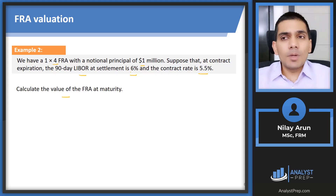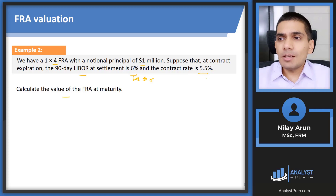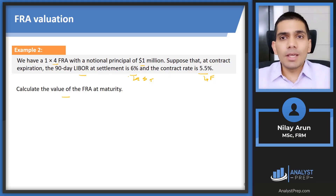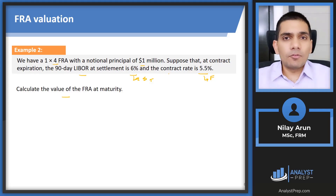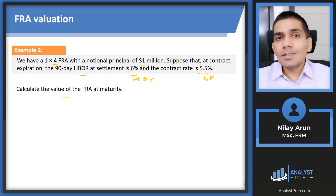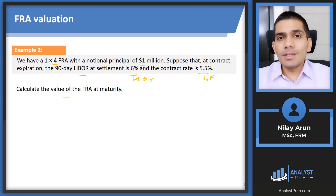Without any formula, let's think about this logically. The 90-day LIBOR at settlement is 6% — that is your ST, the spot rate at maturity. The contract rate is 5.5% — that is F, the FRA rate. From the borrower's perspective, without the contract they would have paid 6%, but with the FRA they pay only 5.5%, saving 0.5%. So the long is making money: ST minus F equals 6% minus 5.5% equals 0.5%.